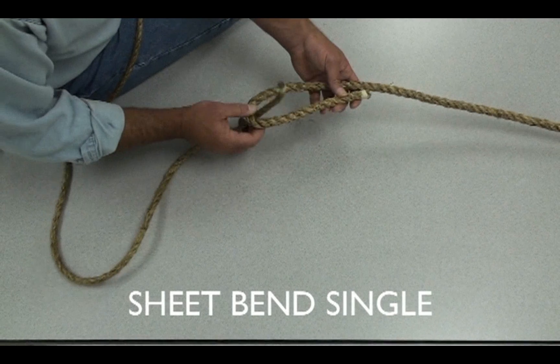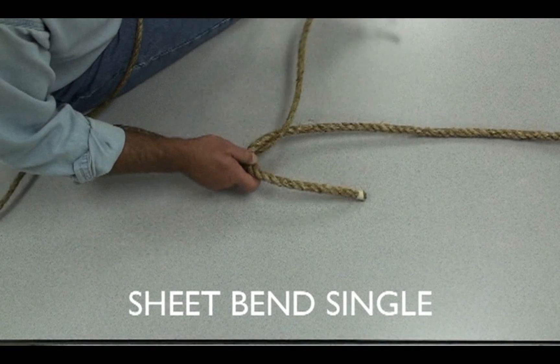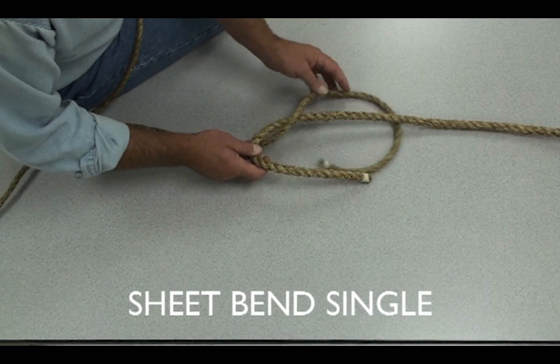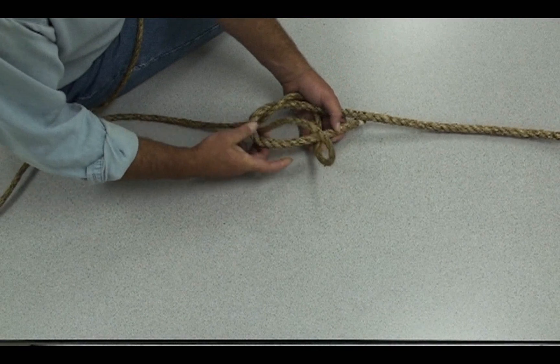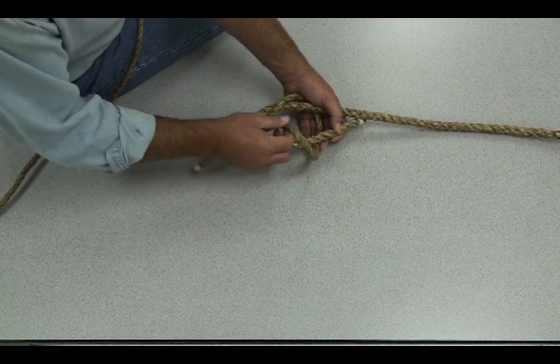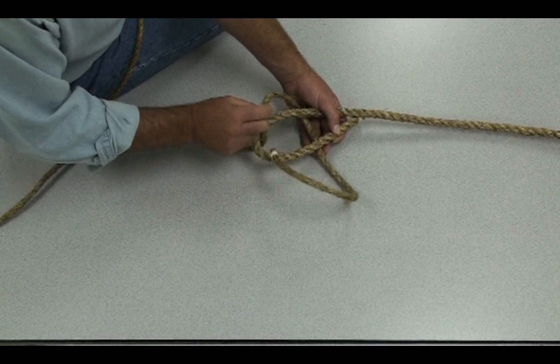And it's just like the square knot. We go around. Instead of coming back in like you would for a square knot, you don't do that. You come underneath here.